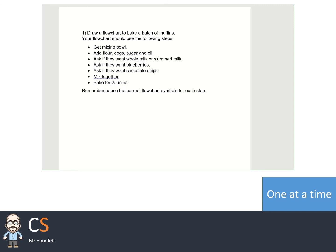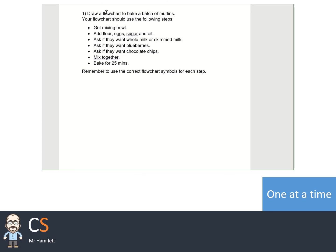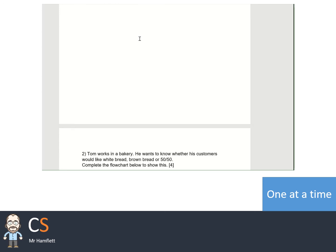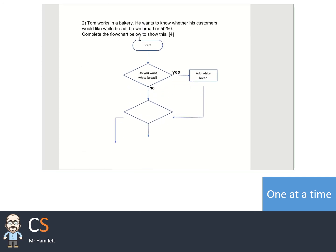There are three questions on the next page and you've got to create a flowchart for each of them. This is a little bit more tricky than before because I'm telling you exactly what you need to put in. The first one — notice that it says 'ask if they want whole milk or skim milk' — you need to make sure that's phrased as a yes/no question. The second question I've started the flowchart off for you, so you need to finish it off — notice it doesn't tell you as much, so you have to think about it more carefully.